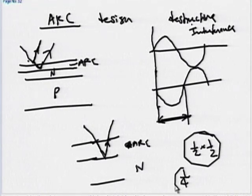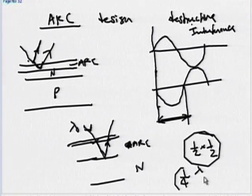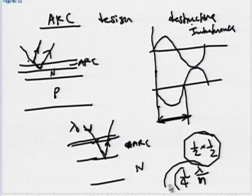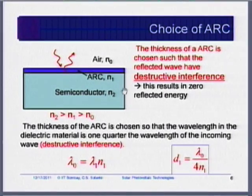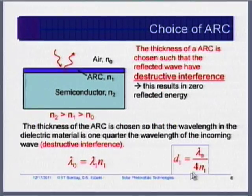One-fourth of which wavelength? The wavelength at which you want minimum reflection. If the wavelength outside the material is lambda, when light enters the material the wavelength becomes lambda divided by n, where n is the refractive index. Therefore the thickness d equals lambda-zero divided by 4n. The factor of 1/4 comes because d is half of the half-wavelength.